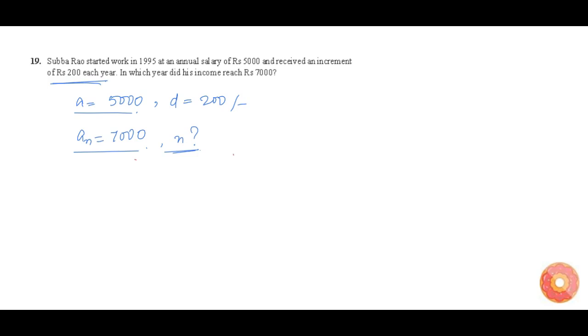If we find N and add 1995 plus N, we will get the year. The formula for finding the Nth term AN is A plus (N minus 1) times D. We know AN, A, and D.